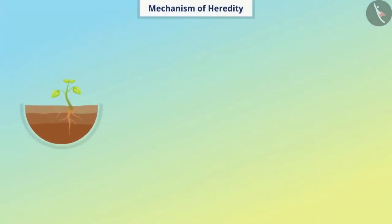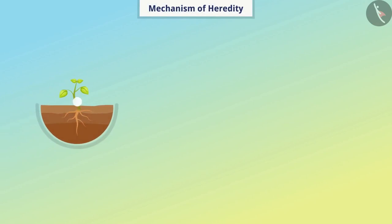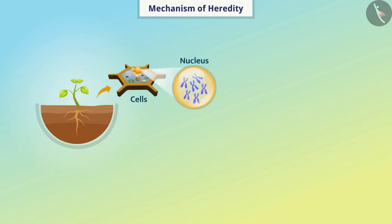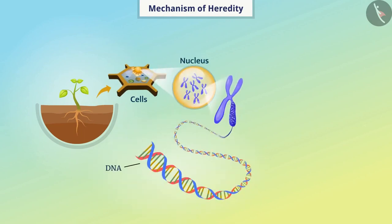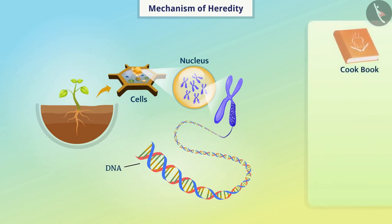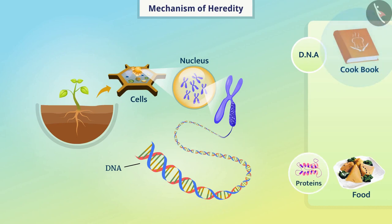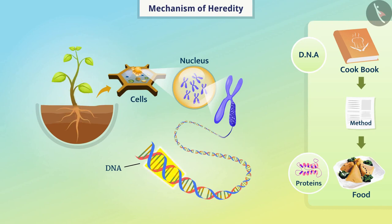Let us understand the mechanism of heredity. The body of an organism is made up of cells. The nucleus of cells consists of DNA. Just as a cookbook is a source of information for cooking, DNA in cells is a source of information for synthesizing proteins. Just as the information about making a dish is stored at any place in the cookbook, the DNA contains specific segments for synthesizing specific proteins. We call each such segment a gene.